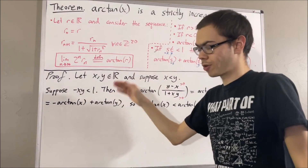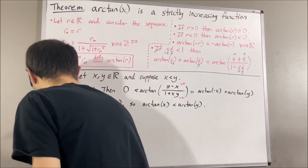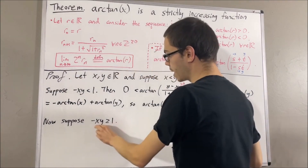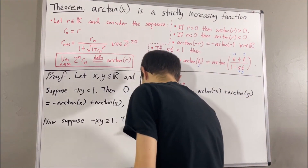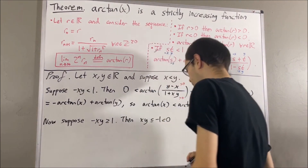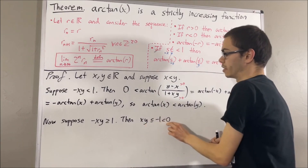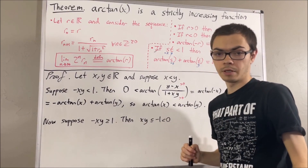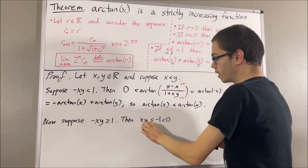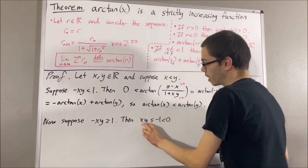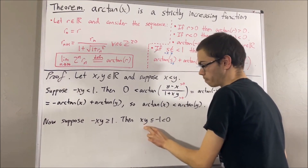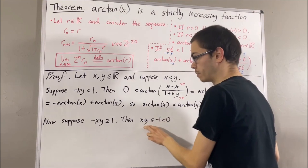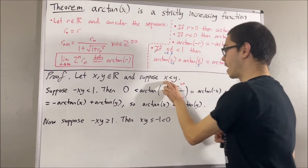Now let's consider the case where negative xy is greater than or equal to 1. If we multiply both sides by negative 1, we get that xy is less than or equal to negative 1, which is less than 0. Since x times y is less than 0, this tells us that x and y must have opposite signs. In other words, either x is positive and y is negative, or x is negative and y is positive. But we must have that x is negative and y is positive, since x is less than y.